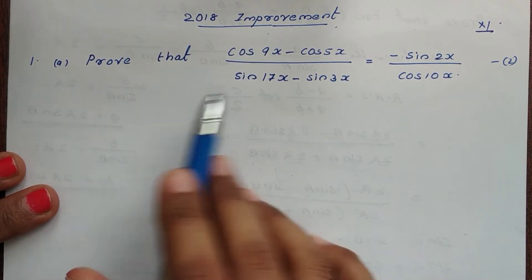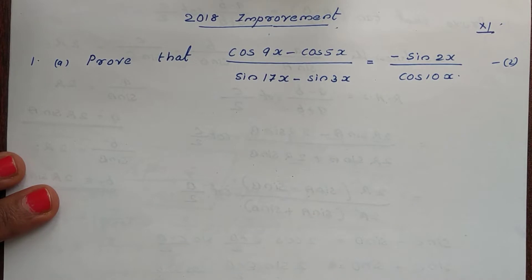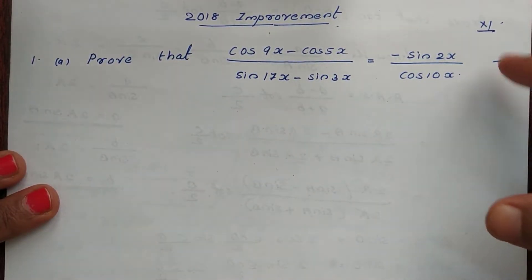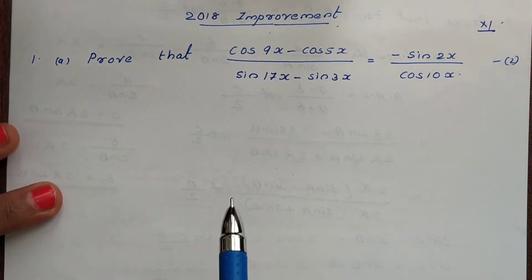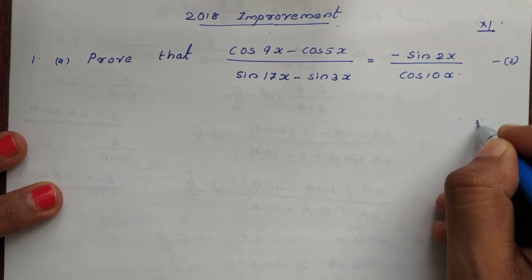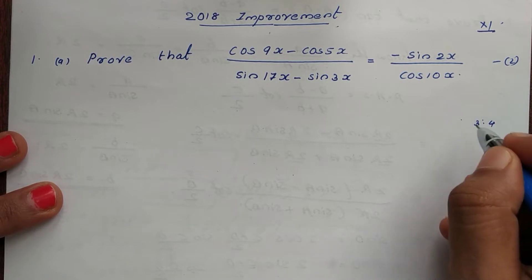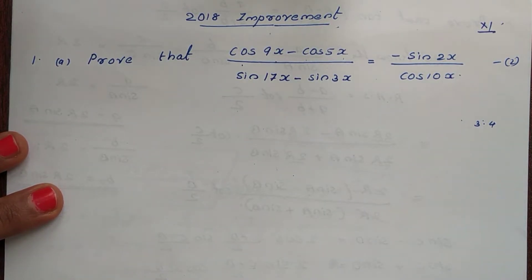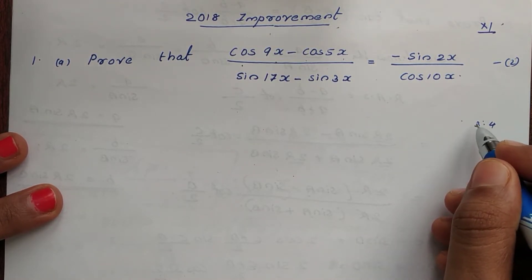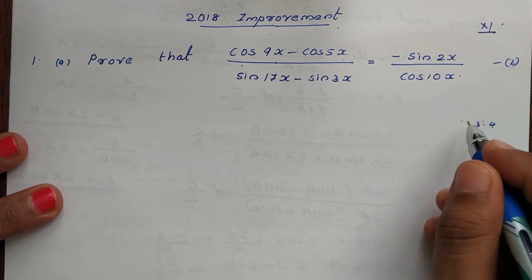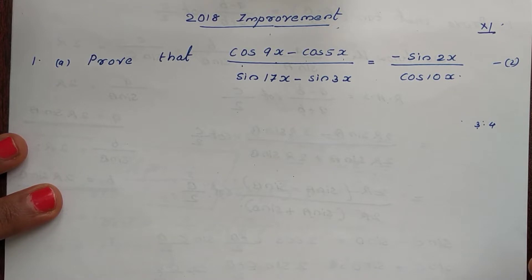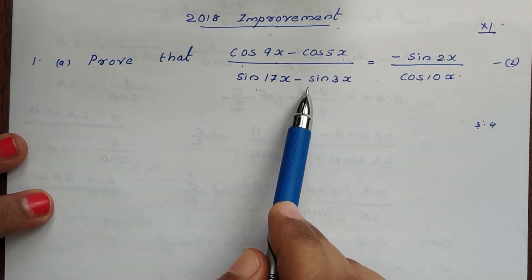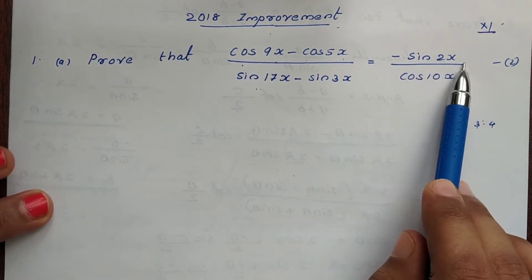The first question is: prove that cos9x minus cos5x divided by sin7x minus sin3x is equal to minus sin2x divided by cos10x.